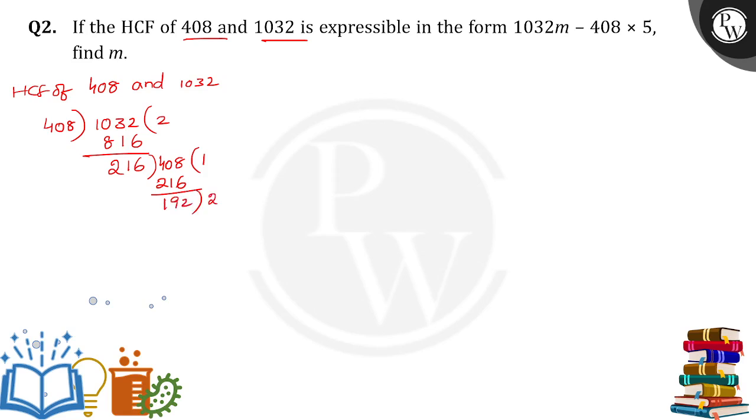Again 192 into 216 for how many times, 1 times. Again you will get 192. So 216 minus 192, get 24.